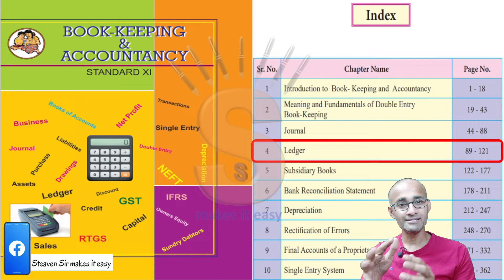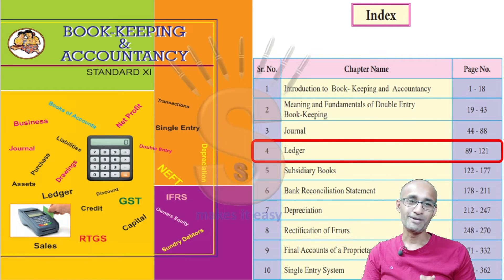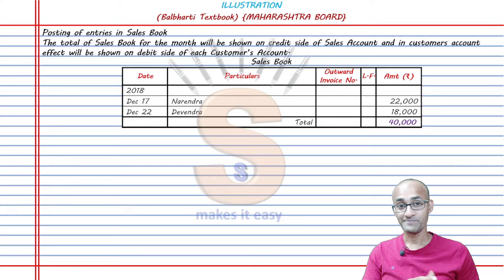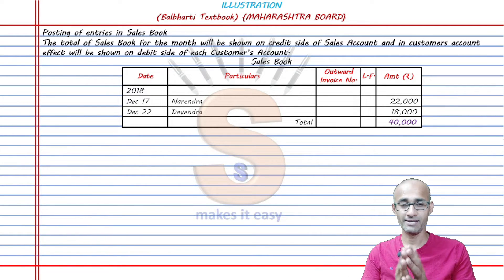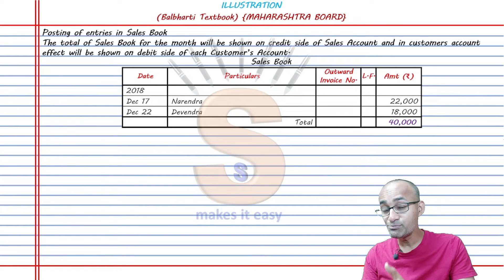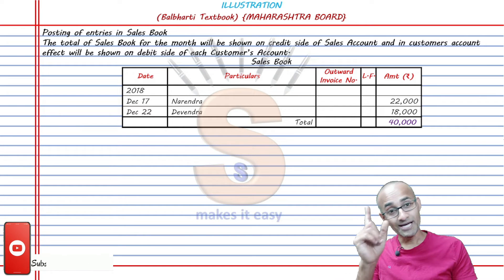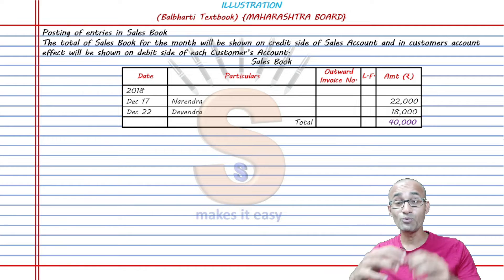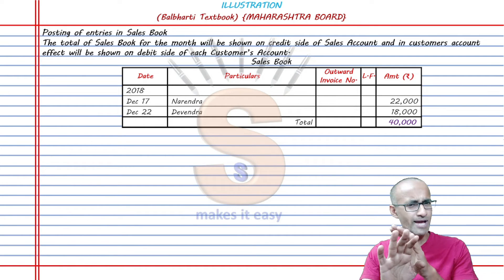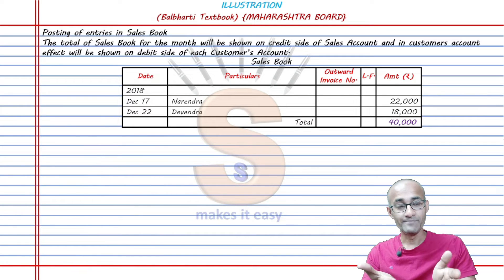Hello and welcome back to Steaven Sir Makes It Easy. What is a subsidiary book? When you write the journal in which you record the whole Ramayana, the whole Mahabharata — when it becomes very long — that is called subsidiary books.